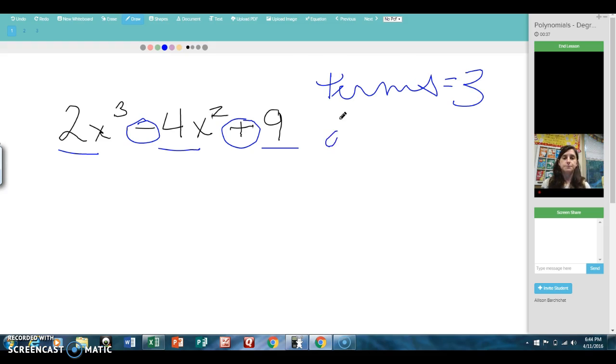Now let's talk about the degree. The degree is the highest exponent that you see in the problem. The biggest exponent we see here is a 3. So the degree is 3. When the degree is 3, we call it cubic. So this is a cubic trinomial.